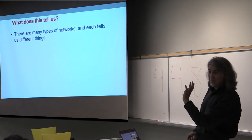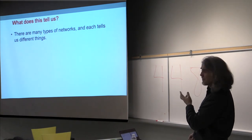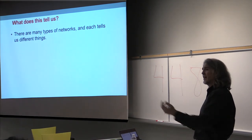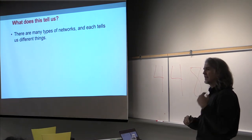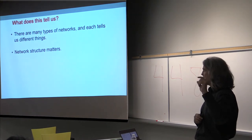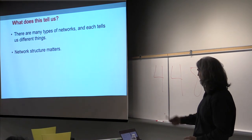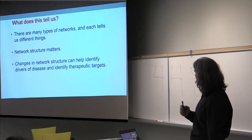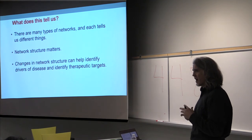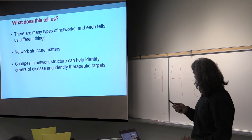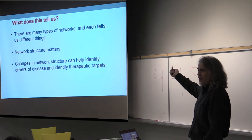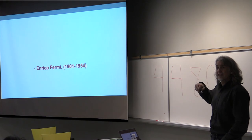All this tells us some important lessons. There are many types of networks that all tell us different things. The network structure matters — when you look at a network you need to understand what the edges are telling you and what the structure is telling you. Changes in network structure can help identify drivers of disease and therapeutic targets. If we analyze the networks carefully we can gain insight into the biology of the system we're studying.